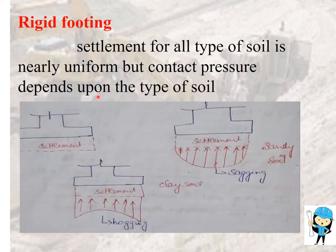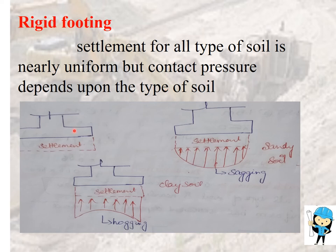Now we are going to see the rigid footing contact pressure distribution, which is the opposite of flexible footing. In flexible footing, contact pressure is uniform but settlement depends on soil type. Here it is the opposite — settlement is uniform for all soils, and the contact pressure depends upon the type of soil. In sandy soil, the contact pressure distribution shows a sagging moment, and in clay soil, the contact pressure distribution is hogging.